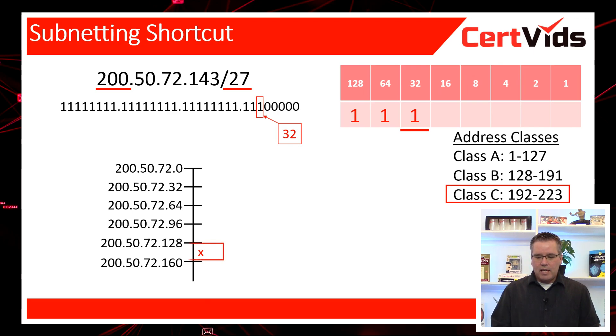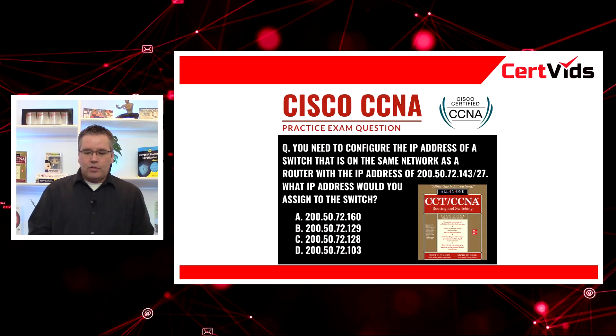So the answer to our question is going to be a number within that subnet. From 128 to 159 is the network range that we're dealing with. 160 would be the network ID of the next network range. So we take a look at our choices and narrow down which of those numbers fall between 128 and 159.